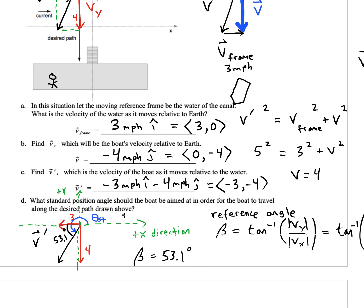The way it works is: if you're in quadrant 1, the reference angle and the standard position angle are the same. If you're in quadrant 2, you want to do 180 minus your reference angle. If you're in quadrant 3, which we are, we want to do 180 plus 53. And if you were in quadrant 4, you would do 360 minus the reference angle. So let's do the process for quadrant 3, which would be 180 plus 53.1, which gives us 233. So that is the angle that we want to aim the boat at in order for it to travel straight across.